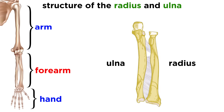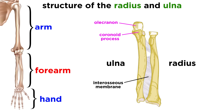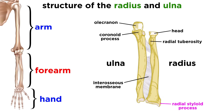Moving on to the forearm, we now see two bones: the radius and the ulna. These are connected all the way down by the interosseous membrane, a flexible ligament. The ulna is slightly longer with its olecranon and coronoid process. The radius goes from wide to thin the other way, with a thin head, the radial tuberosity, and a radial styloid process.